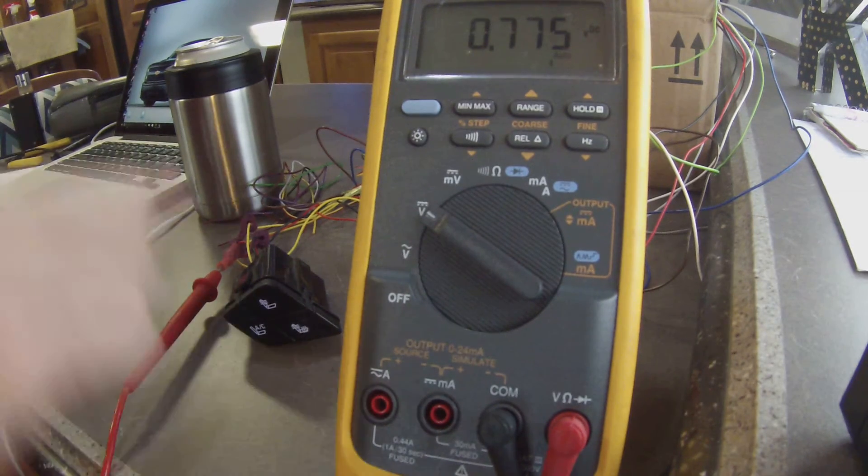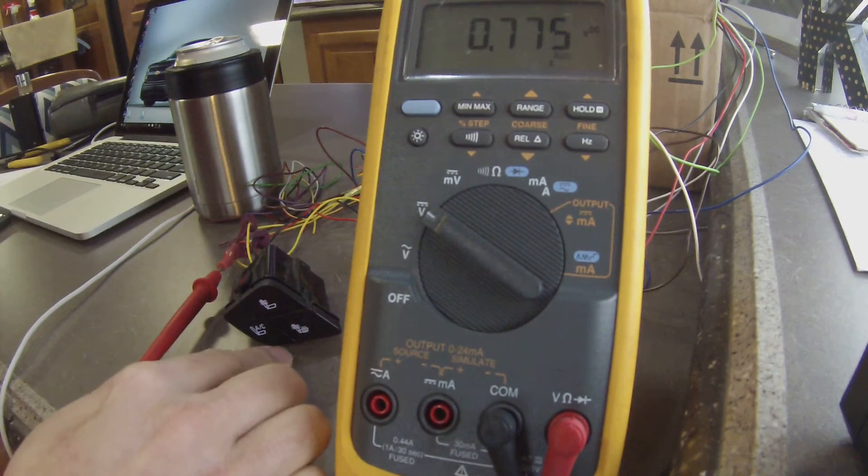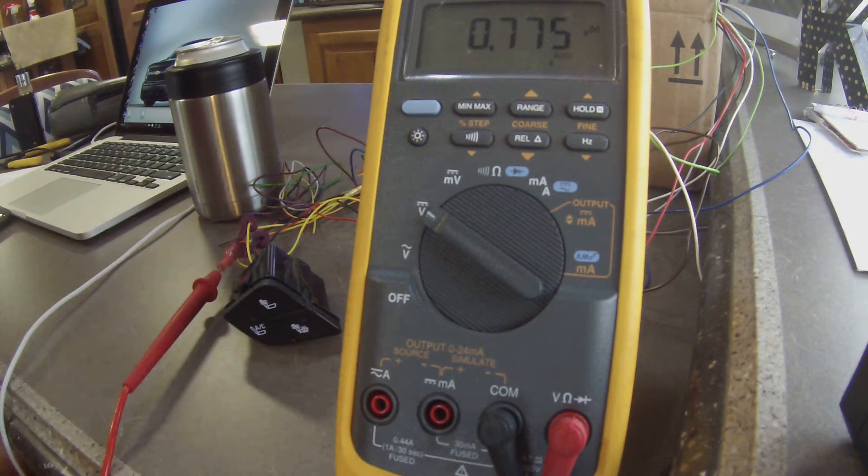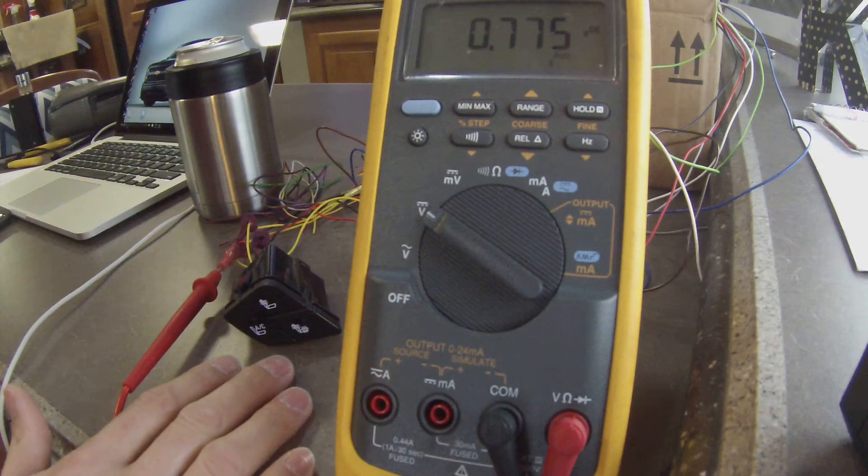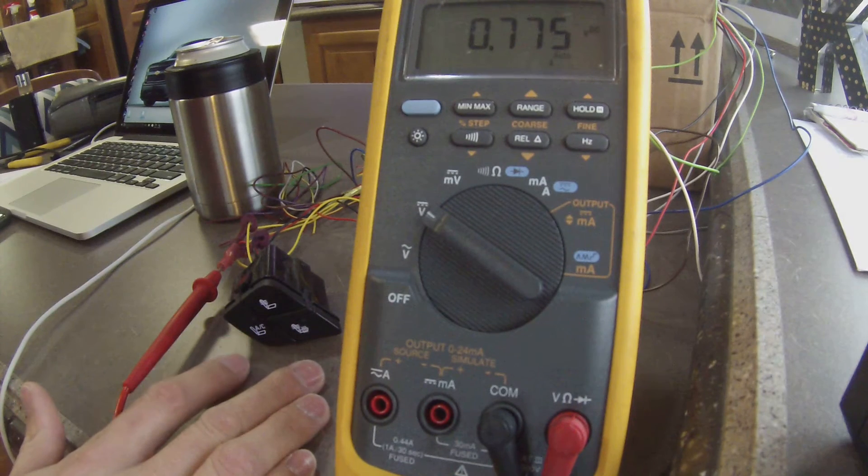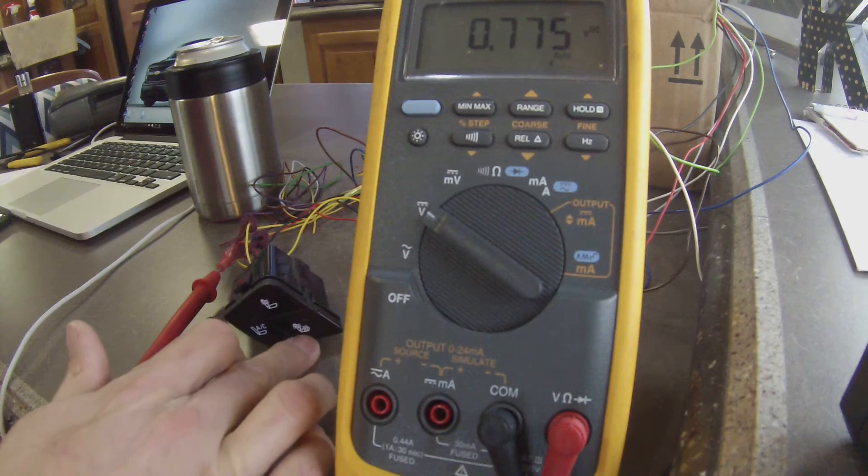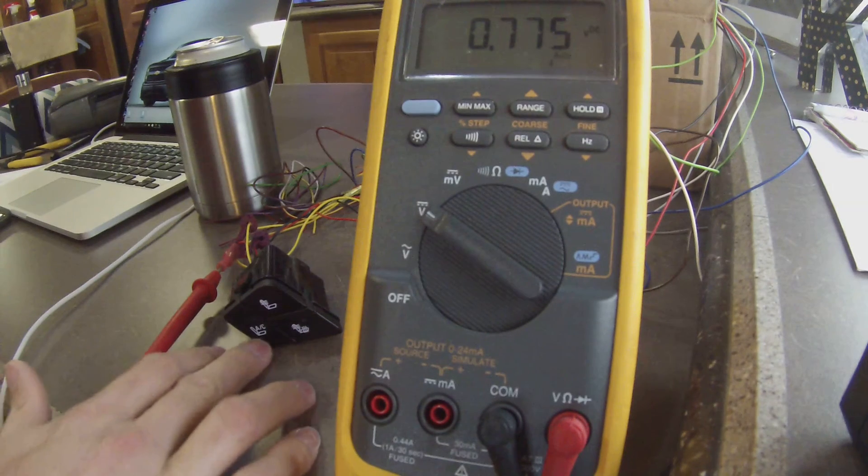Because if you look at this for this one device, there's nine, technically ten states on this switch. It's in state zero right now where nothing's on, and then you've got three states for each switch. So high, medium, low, high, medium, low, high, medium, low.